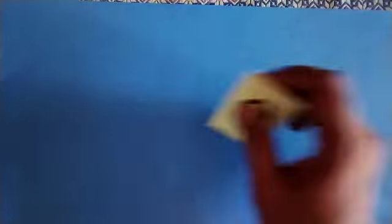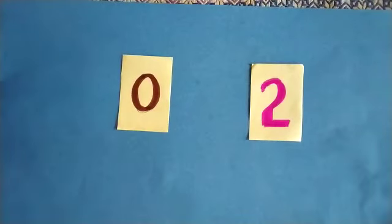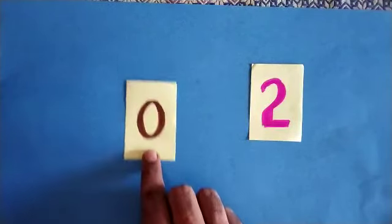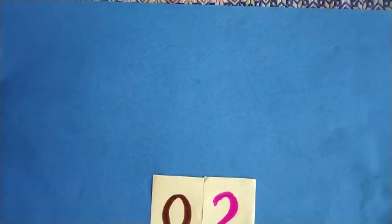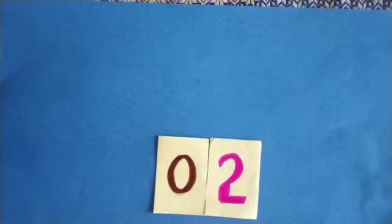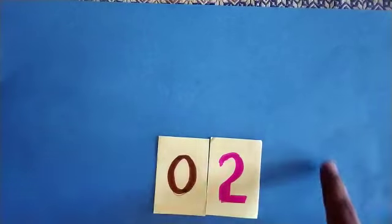Now sometimes you may come across like this. Suppose you are given like this, 0 and 2. Then if you take this number first here and keep the second number here, now what is this number? This number is 2. 2 is not the 2 digit number. Whenever a 0 will come at the tens place, then this number won't be a 2 digit number. It will be a 1 digit number.